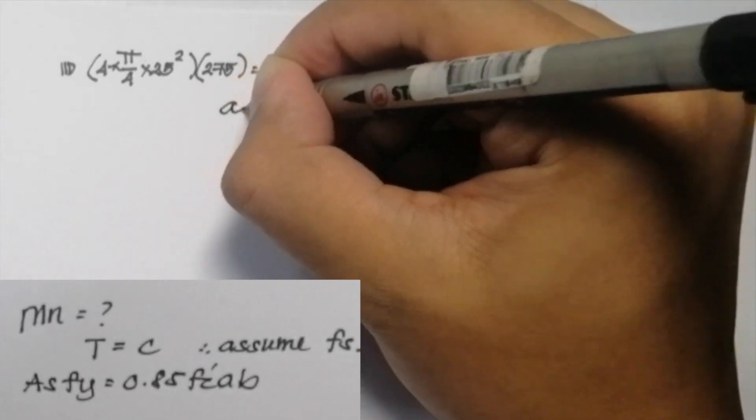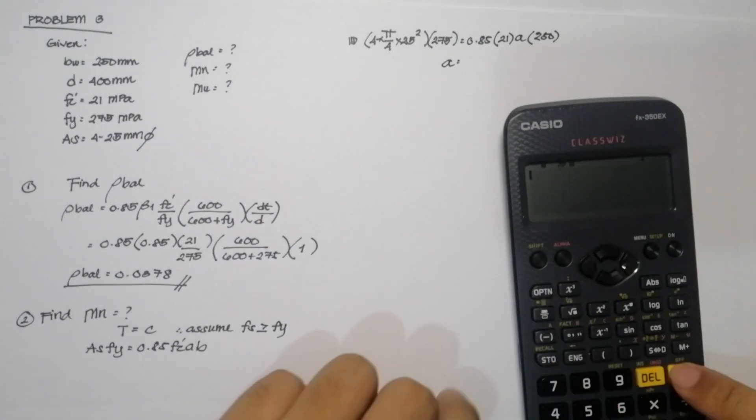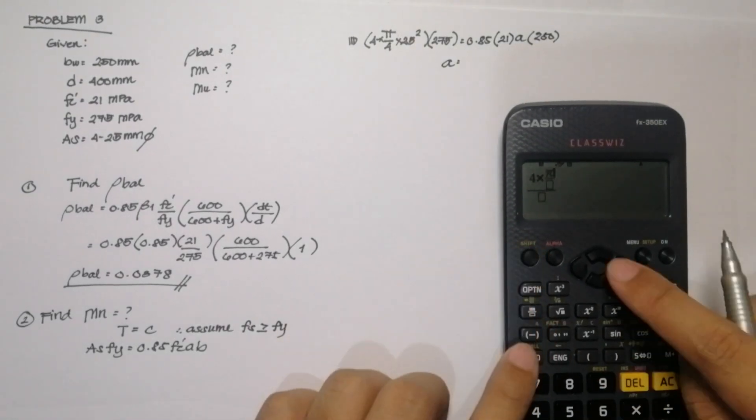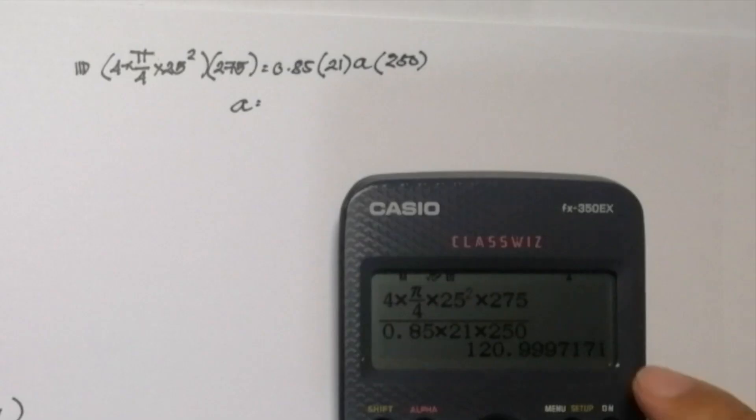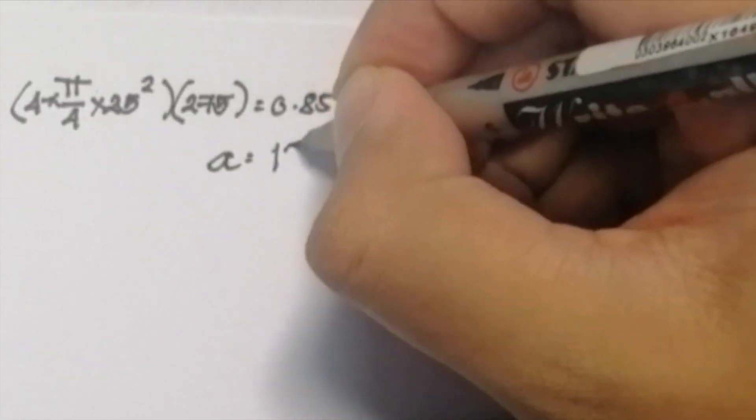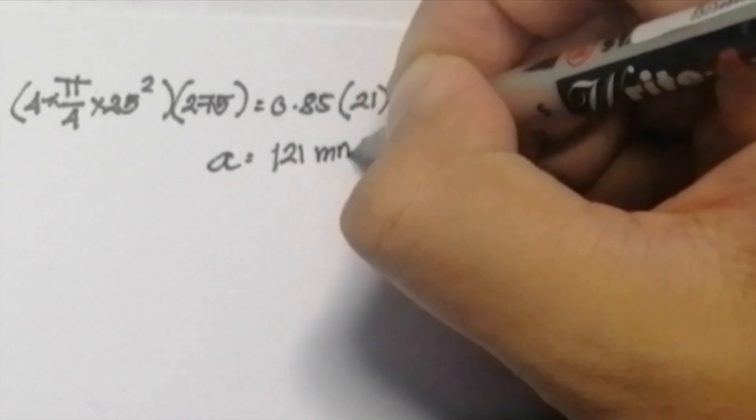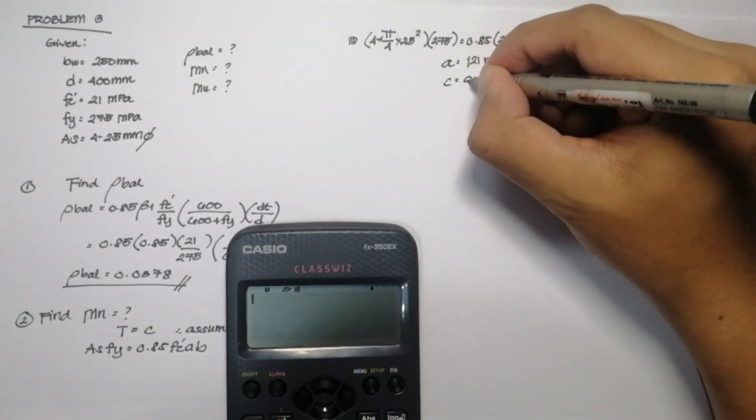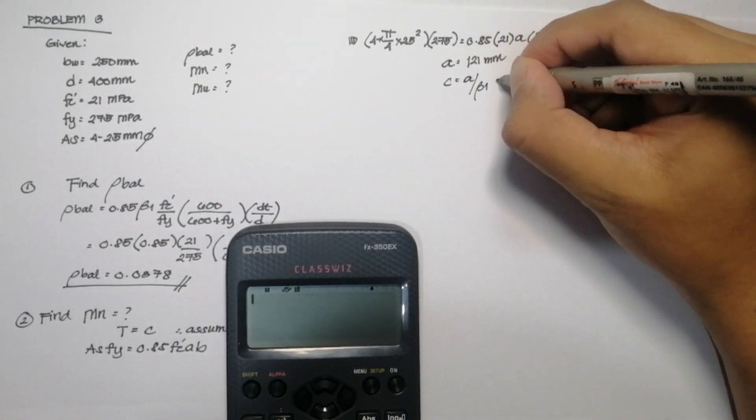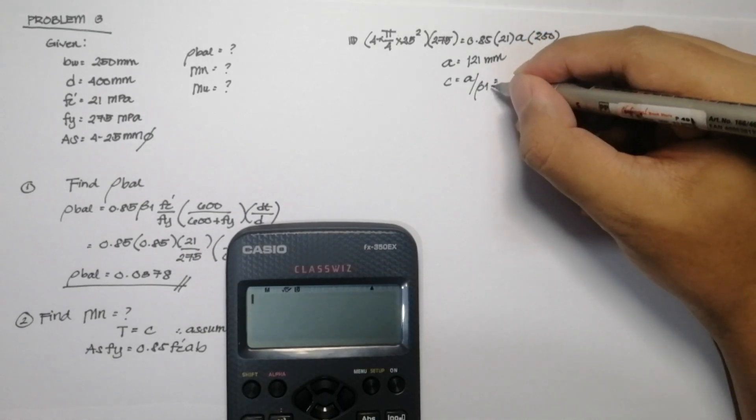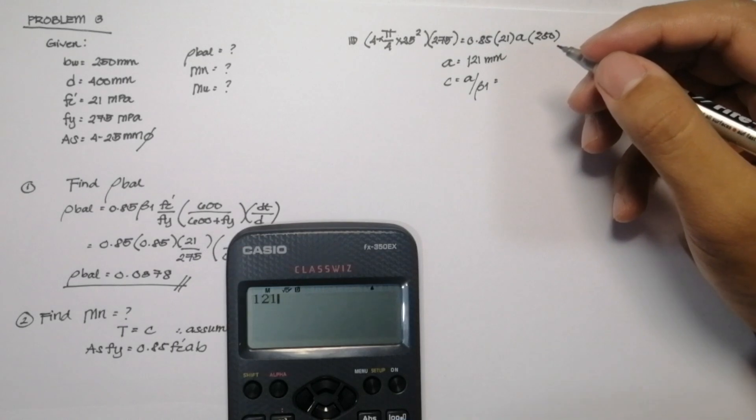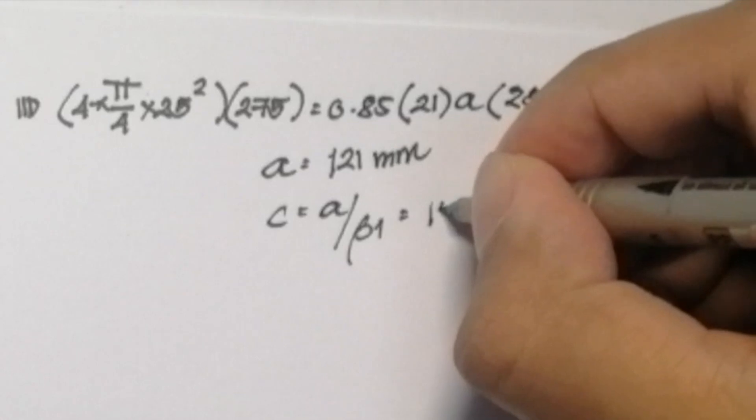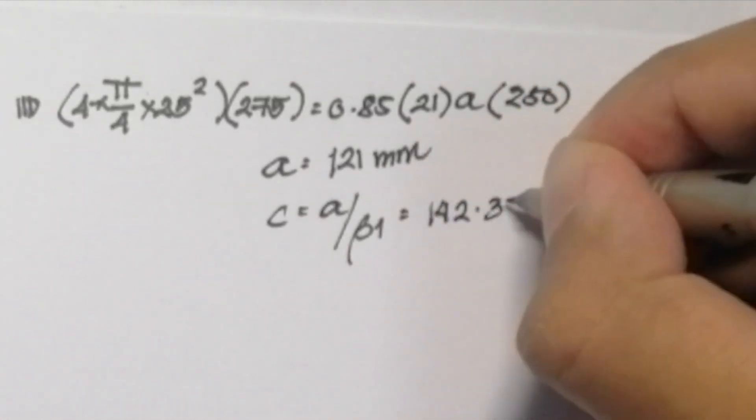So by solving for our A or the depth of the compression block, we can get a value of 121. So next, we are going to solve for the value of C, in which we can use the formula C is equal to A over beta 1. And our beta 1 will be equal to 0.85 since our compressive strength is equal to 21 MPa. Our answer will be 142.353 mm.